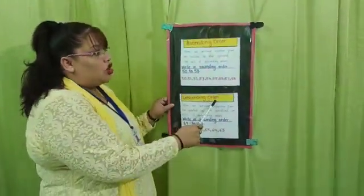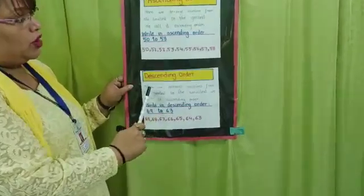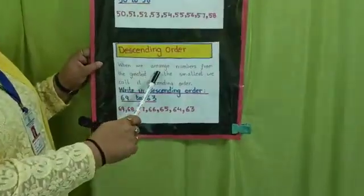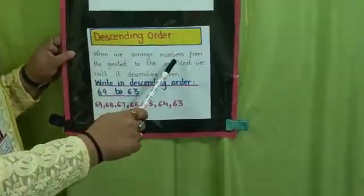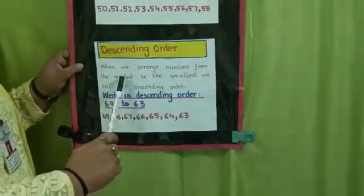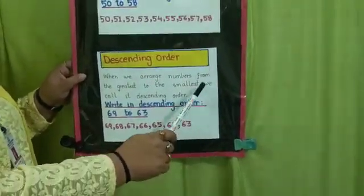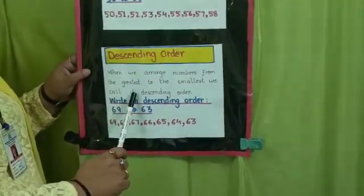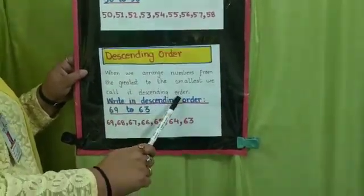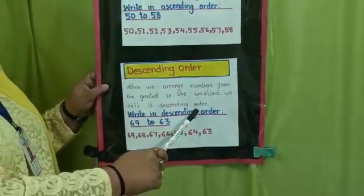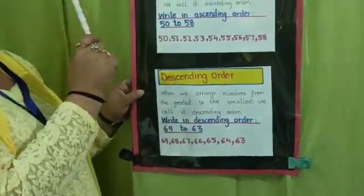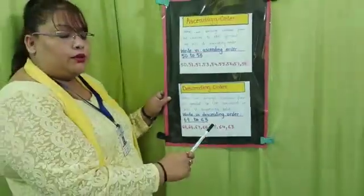Descending order. When we arrange numbers from the greatest to the smallest, we call it descending order — means big to small.